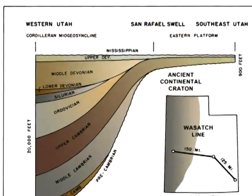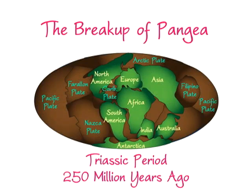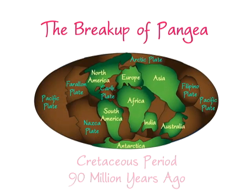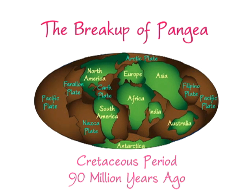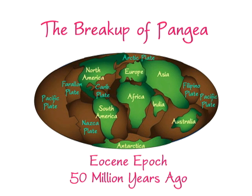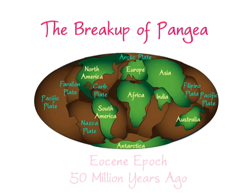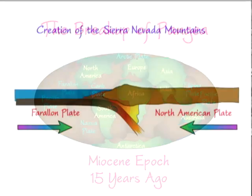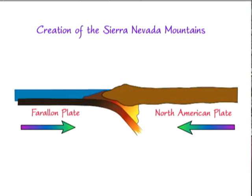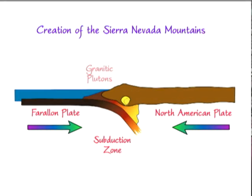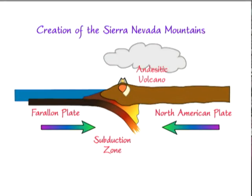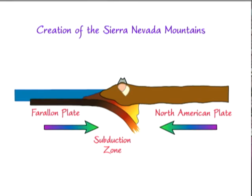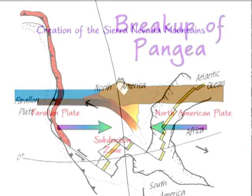The North American tectonic plate began to separate from the rest of Pangaea about 200 million years ago, and was moving westward into the Farallon Plate, which was subducting under the western margin of North America. The sediments carried down with it were heated and rose toward the surface to cool as granitic plutons, forming the Sierra Nevada Mountains. For the first time, the western half of Utah and Nevada rose above the ocean.